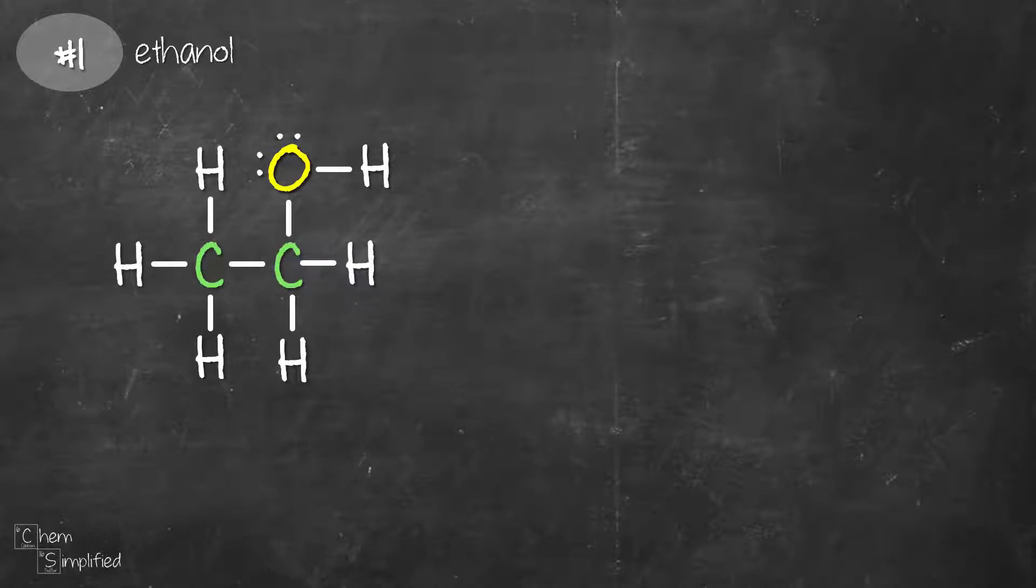Let's start with our first example. We're going to draw ethanol in 3D. Here is its Lewis structure in 2D. These green carbons here have 4 groups connected to them. Since they each have steric number 4 and they don't have any lone pairs, that makes their geometry tetrahedral.